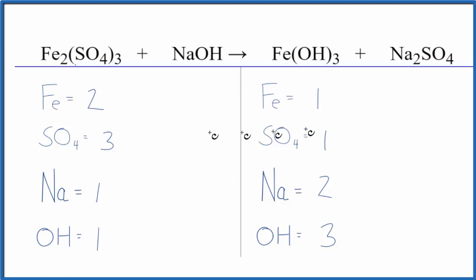Let's just balance the iron first. We'll put a two here, one times two, that gives us two irons. So those are balanced, but this three times two, that'll give us six hydroxides.